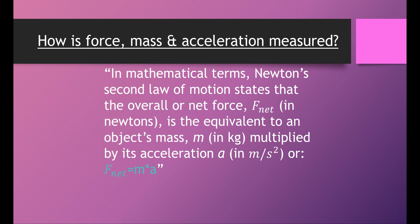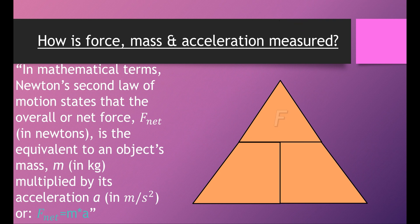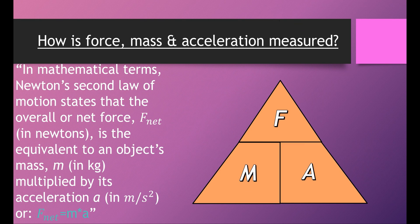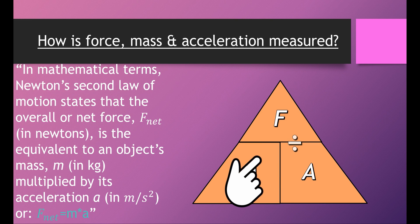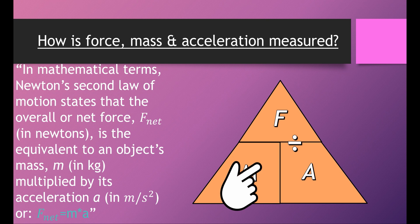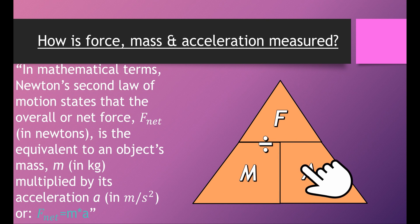How is force, mass, and acceleration measured in mathematical terms? Newton's second law of motion states that the overall net force is equivalent to an object's mass multiplied by its acceleration. Let's make a diagram to explain it better. On the pyramid we have force, mass, and acceleration. Cover force: the formula is mass multiplied by acceleration. Cover mass: the formula is force divided by acceleration. Cover acceleration: the formula becomes force divided by mass.